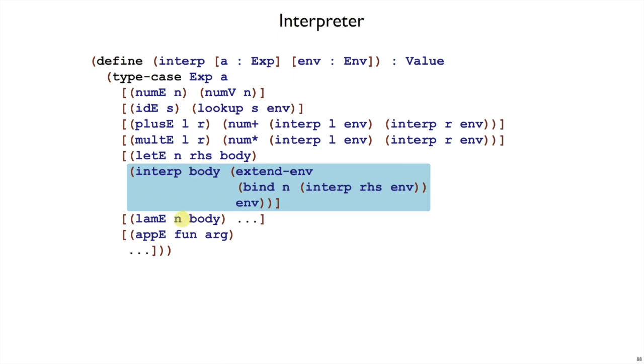The new part is lamb e, so let's look at what we should do here. For lamb e, what we have to work with, and what the template would suggest, is that there's a body and it's an expression, so we should interpret. But here is a case where the template suggests something that's wrong. We don't want to evaluate the body of a function until the function is called.